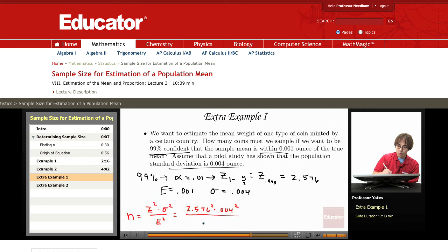And we're taking .001 and squaring that. So when you calculate all that, you should get 106.1724.